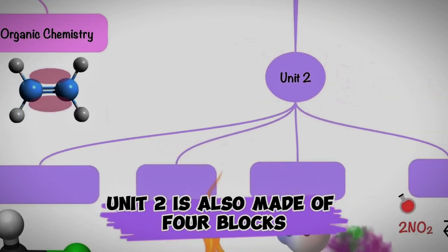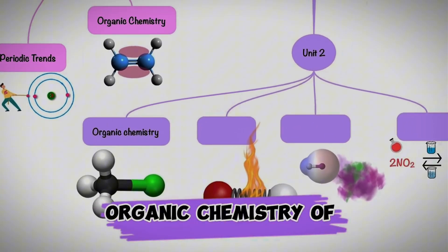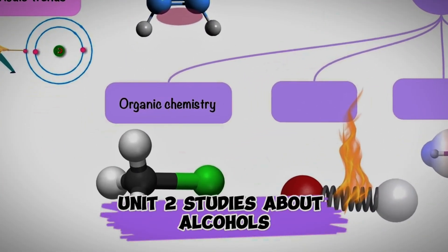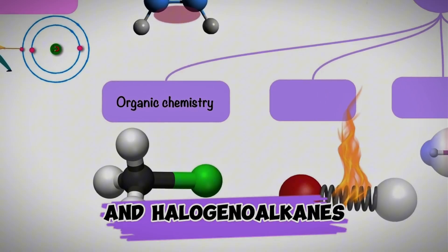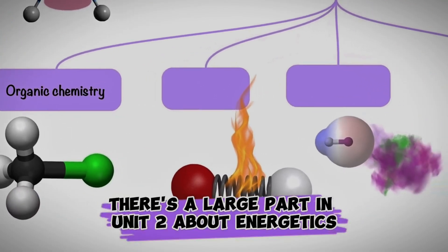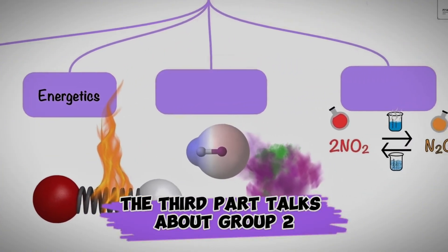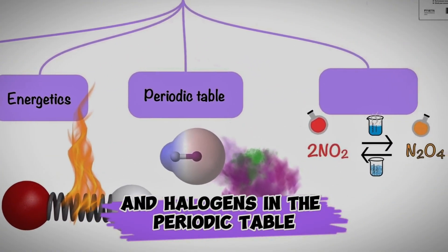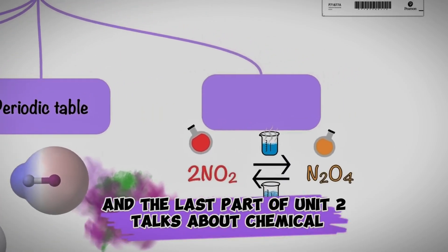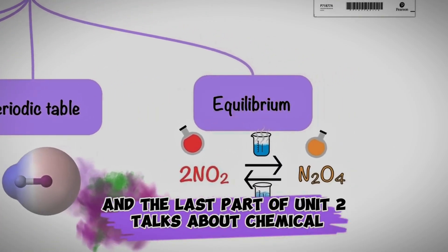Unit 2 is also made of four blocks. Organic chemistry of unit 2 studies alcohols and halogenoalkanes. There's a large part in unit 2 about energetics. The third part talks about group 2 and halogens in the periodic table. And the last part of unit 2 talks about chemical equilibrium.